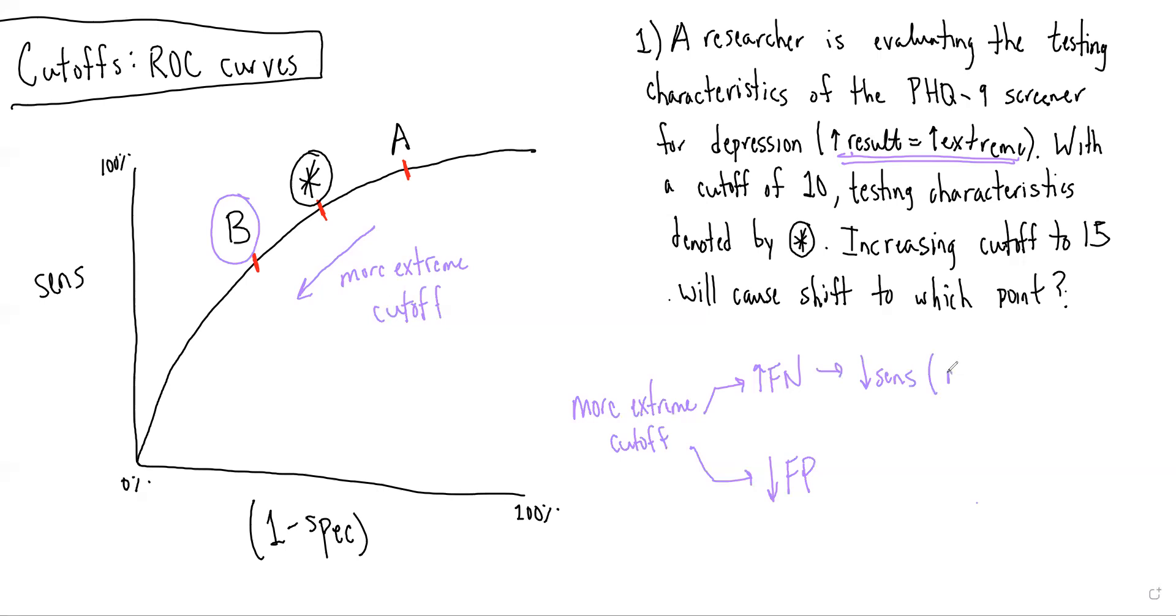So we need to move down on the ROC curve, because sensitivity is our y-axis. And we would have an increase in specificity, which is denoted by moving to the left, because the x-axis is 1 minus specificity.